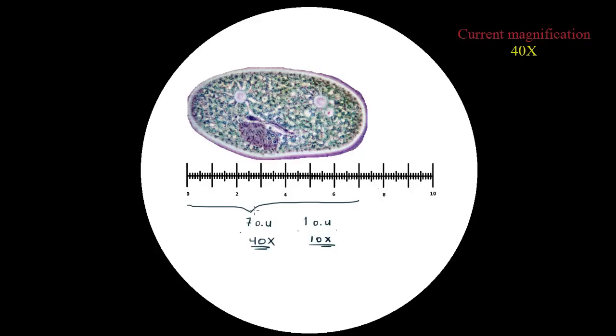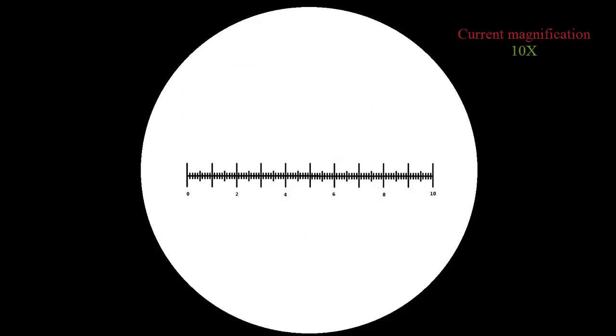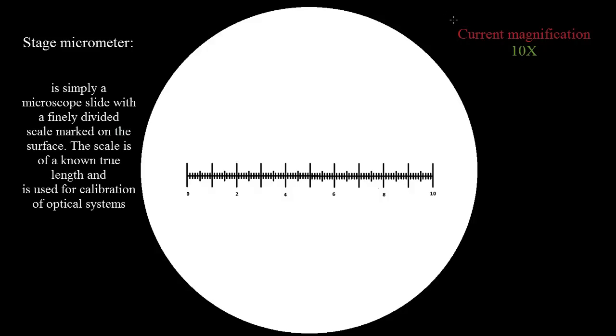So by now it should be clear to you why ocular units don't actually mean anything unless we calibrate the microscope. So how do we do that? In order for us to start calibrating our microscope we will need something known as the stage micrometer. What is a stage micrometer you ask? Well a stage micrometer is quite simply a factory made one millimeter unit that you can load onto your microscope stage, and that's what I'm going to do.